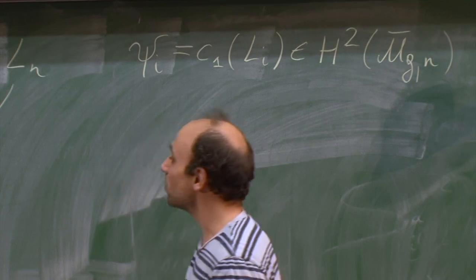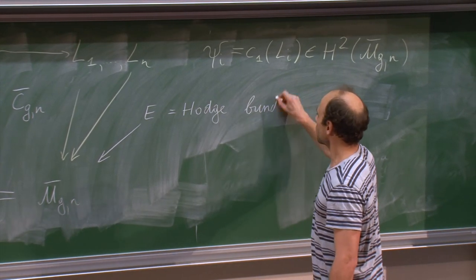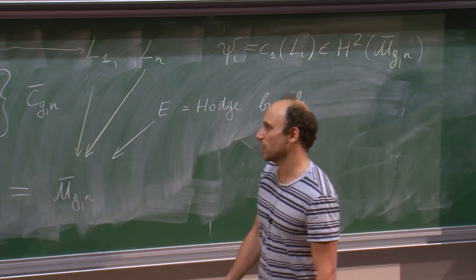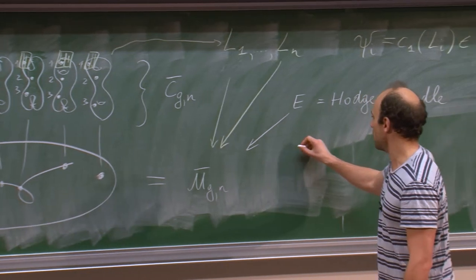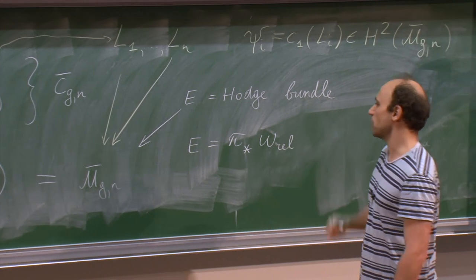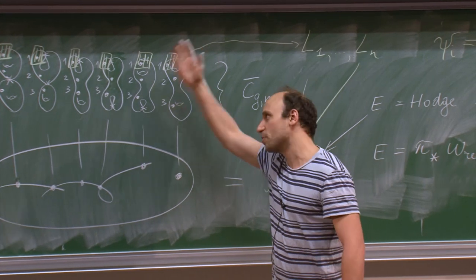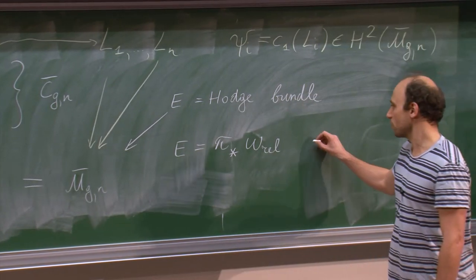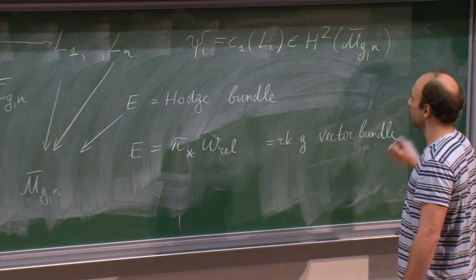You also have the Hodge bundle. The fibers of the Hodge bundle are spaces of abelian differentials. If I call the map π, then E is the pushforward of the relative cotangent line bundle. Sections on each fiber are abelian differentials on that fiber, and over each point you have a dimension-g space of abelian differentials. So this is a rank-g vector bundle. In this formula you have its dual.